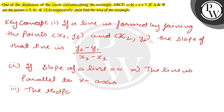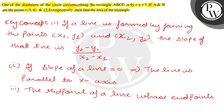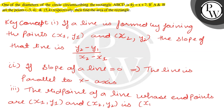Third key concept: the midpoint of a line whose endpoints are (x1, y1) and (x2, y2) is given by ((x1 + x2)/2, (y1 + y2)/2).